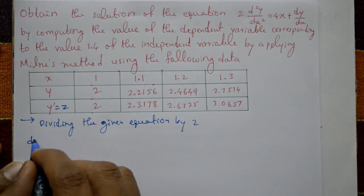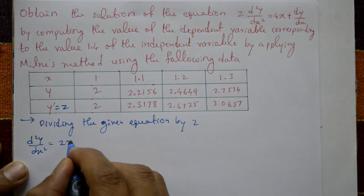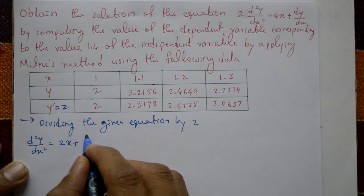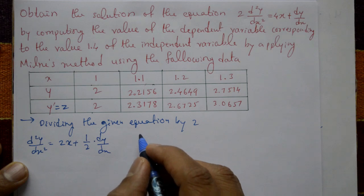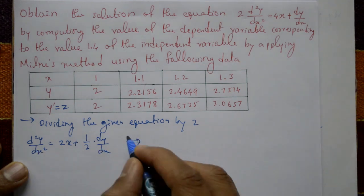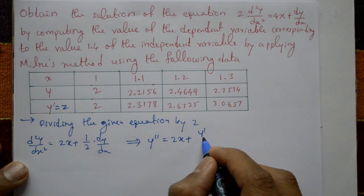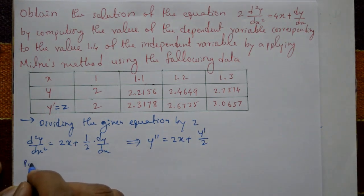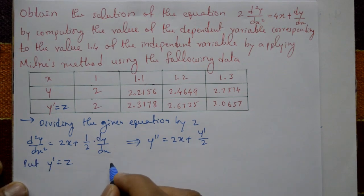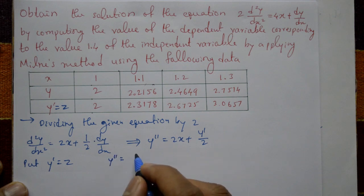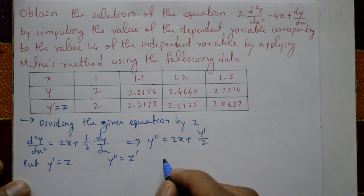The equation is d²y/dx² equal to 2x plus (1/2)(dy/dx). This means y double dash equals 2x plus y dash divided by 2. Now we put y dash equal to z. Differentiating, y double dash becomes z dash, so the second order equation becomes z dash.